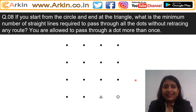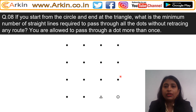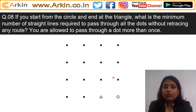This is question number eight. The question says: if you start from the circle and end at the triangle, what is the minimum number of straight lines required to pass through all the dots without retracing any line? You are allowed to pass through a dot more than once. So you have to start from the circle, end at the triangle, cross all the dots, and you cannot draw any line twice.